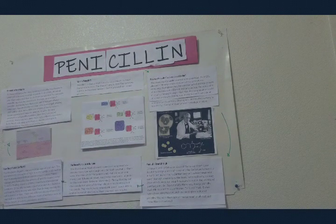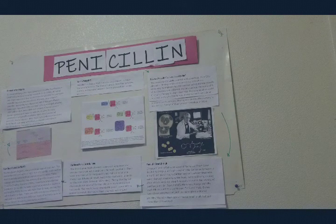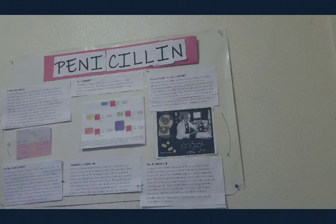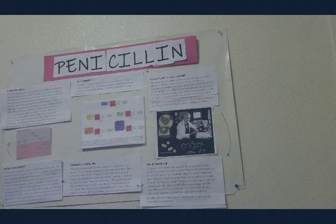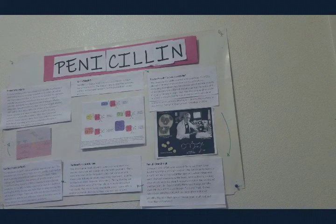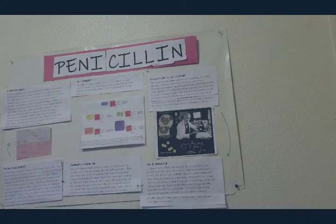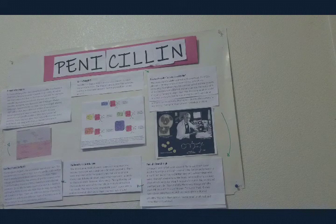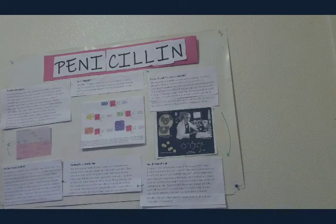It wasn't until 1939 that penicillin had a breakthrough. Howard Florey and Ernest Chain decided to design a method to culture the fungus to produce it in sufficient amounts for further testing. They used Fleming's discovery as the basis. Norman Heatley, a young chemist in Florey's lab, played an essential role in the process of purifying penicillin. By mid-1940, there was enough penicillin available to start trials with mice. In these trials, eight mice were given Streptococcus and two were given a dose of penicillin. The mice that did not receive penicillin all died, and those that did survived.